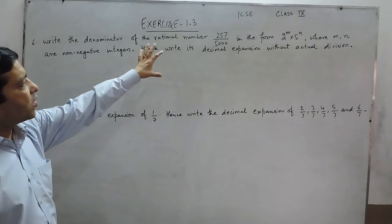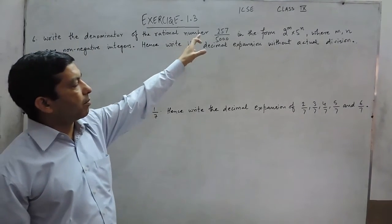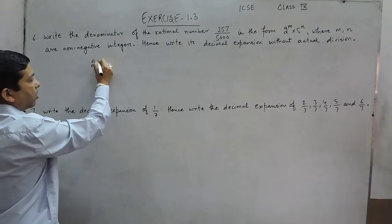Hello everyone. Exercise 1.3, question number 6. Write the denominator of the rational number 257 upon 5000.